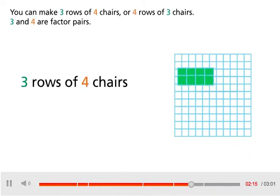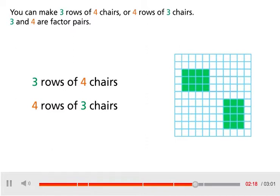You can make 3 rows of 4 chairs or 4 rows of 3 chairs. 3 and 4 are factor pairs.